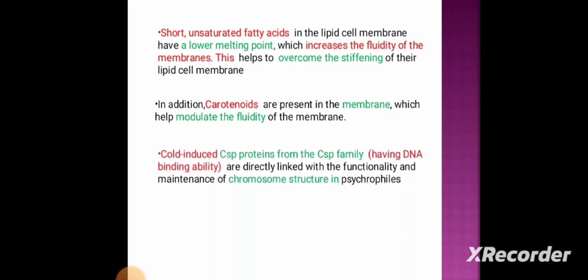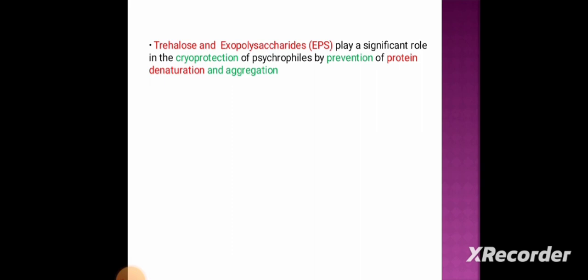The cold-induced CSP proteins in the CSP family having DNA binding ability are directly linked with the functionality and maintenance of chromosome structure in psychrophiles. The CSP protein overexpression protects and promotes chromosome folding. The trehaloses and exopolysaccharides play a significant role in the cryoprotection of psychrophiles by prevention of protein denaturation and aggregation.